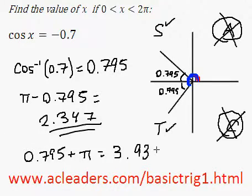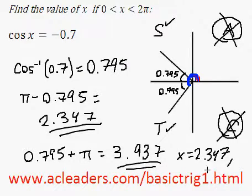So x equals 2.347 and 3.937. Hopefully that made good sense. If not, I'd suggest you take a look at more similar questions on this website. Thank you!